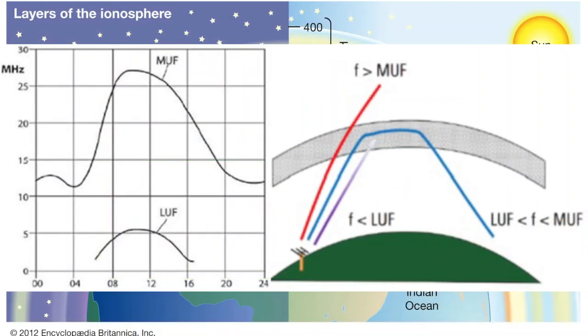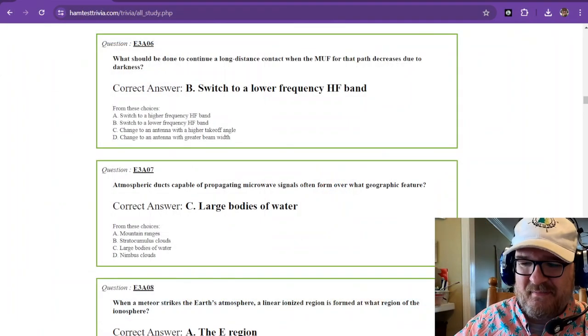I've got a nice little picture of this too. LUF is the lowest usable frequency. The MUF is the highest usable frequency. So you can see, during the hours of nighttime, the lowest usable frequency goes up. If your frequency that you're using is above the maximum usable frequency, it's going to slip right through the atmosphere. And you can see the pictures behind that too that we're going to get into in just a minute.